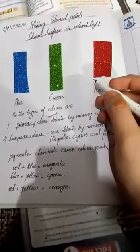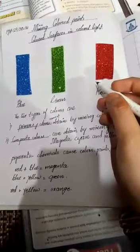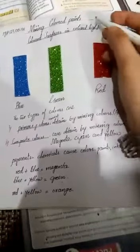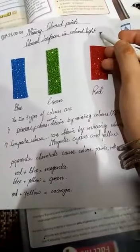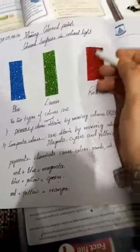This is the explanation of page number 129, 130 and 131. Okay students, what is the name of the topic? The topic name is Mixing Colored Paints and Colored Surfaces in Colored Lights. Okay students, what is this topic going to say to us?